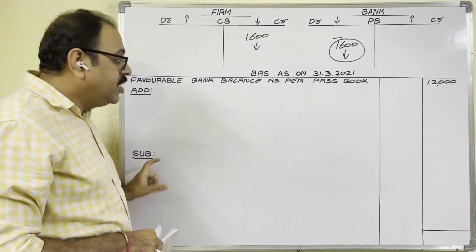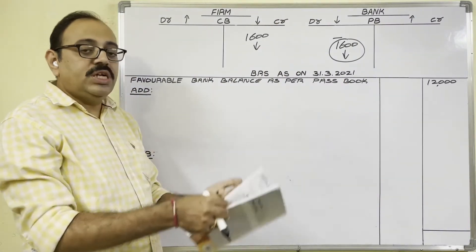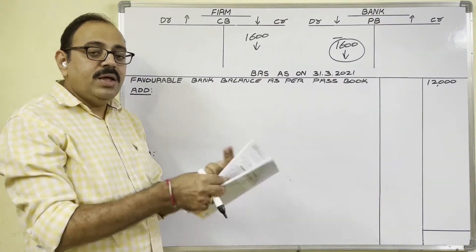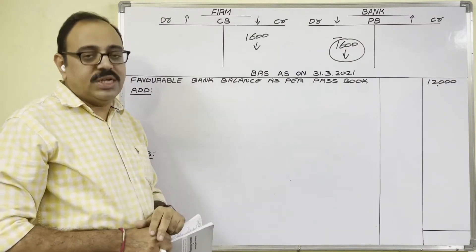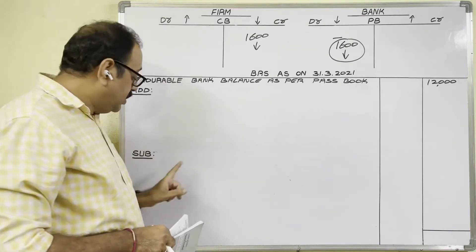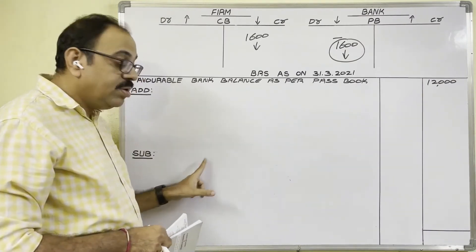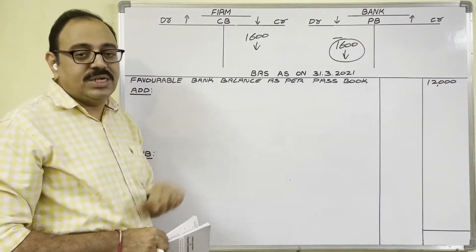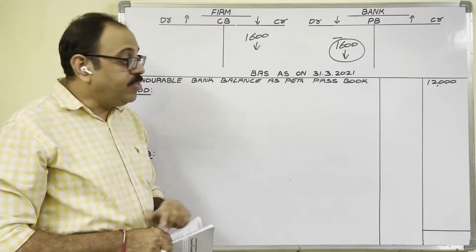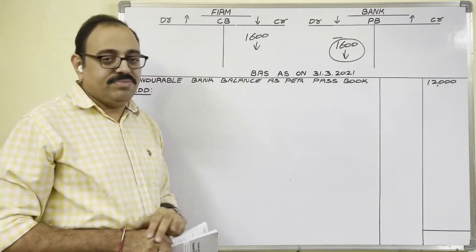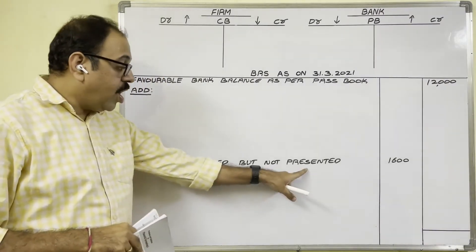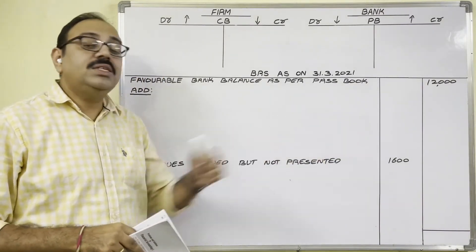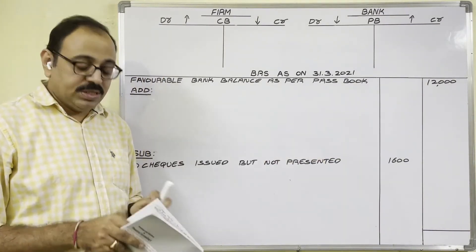So what to write here? We issued cheques but they were not presented. Write: 'Cheques issued but not presented.' If the answer is a decrease, we subtract. Amount in the inner column: Cheques issued but not presented — 1,600 rupees.